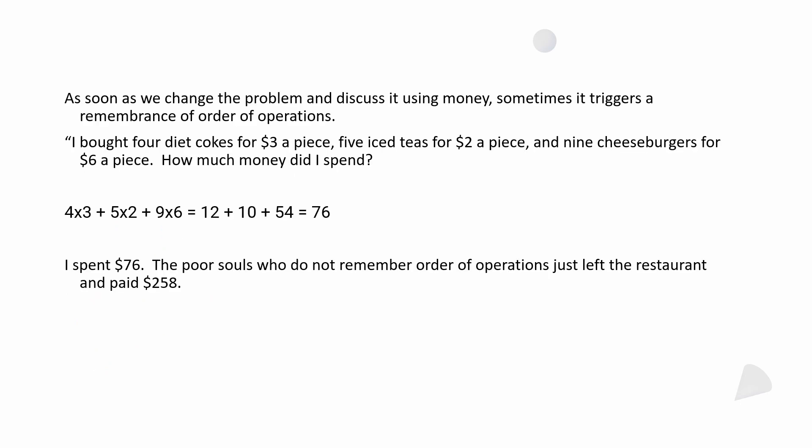As soon as you change the problem and discuss it using money, it triggers a remembrance of order of operations. For example: I bought 4 Diet Cokes for $3 a piece, 5 iced teas for $2 a piece, and 9 cheeseburgers for $6 a piece — how much did I spend? So you take 4 times 3 plus 5 times 2 plus 9 times 6. You do the multiplication first and then add: 12 plus 10 plus 54 equals 76. You spent $76. But the people who don't remember order of operations would be happy paying $258 when they leave the restaurant.